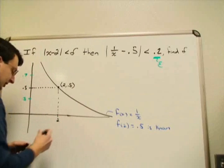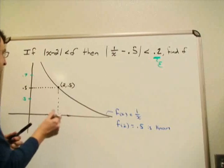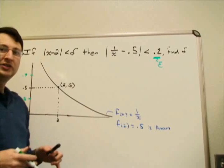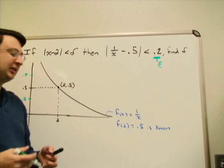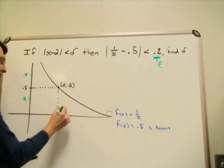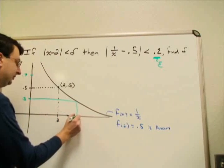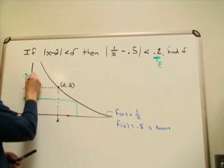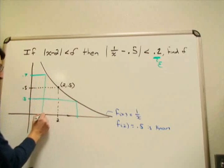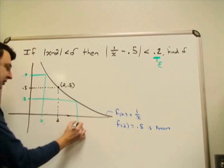Our start for this problem is to look at: for what values of x do I get an output of 0.7, and what values of x do I get an output of 0.3? I'm going to call that my x1 and x2 here.